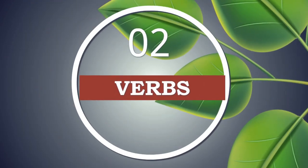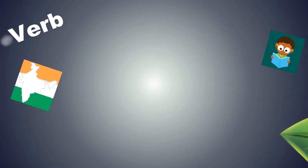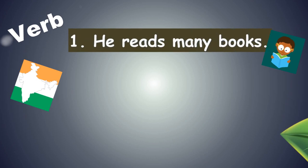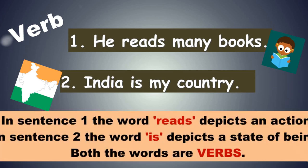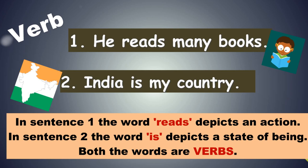We now move on to verbs. Let us understand the concept of verbs. Look at these two sentences: He reads many books, and India is my country. In the first sentence, reads is a verb — reads is an action performed by him. However, in the second sentence, there is no action performed. The word is tells us about the state of being. So verb definition is twofold: it depicts an action, and it depicts a state of being.